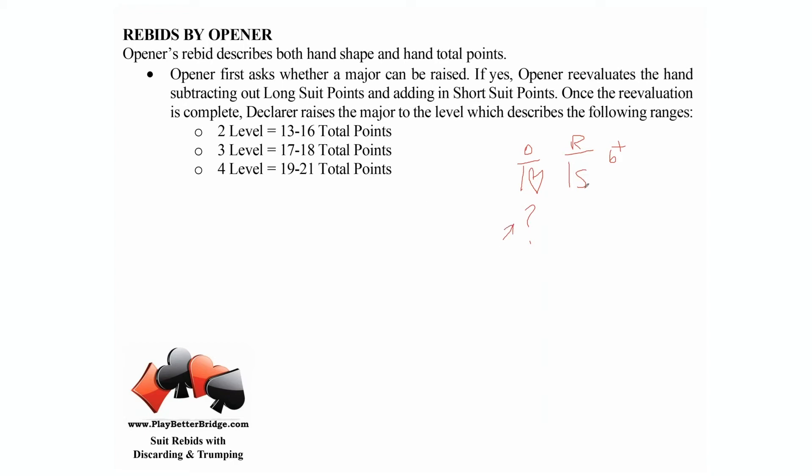If opener is raising responder's one spade bid—if opener wanted to bid two spades, three spades, or four spades—they'd have to subtract out their long suit points and add in their short suit points.